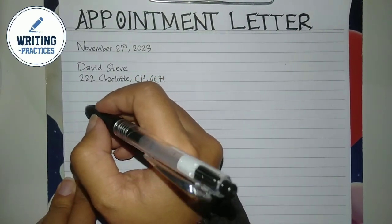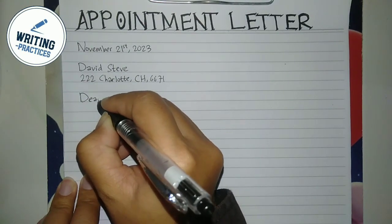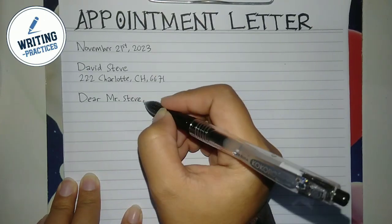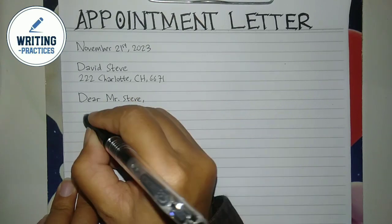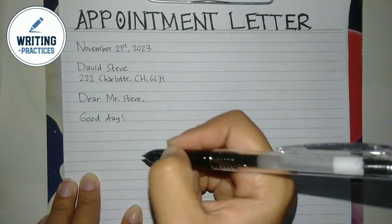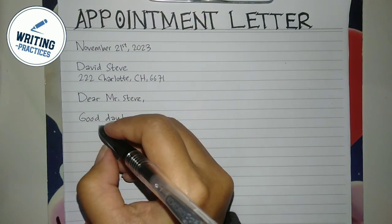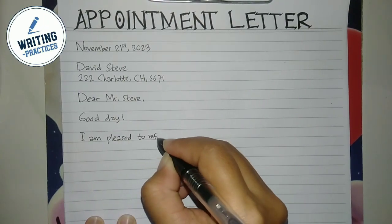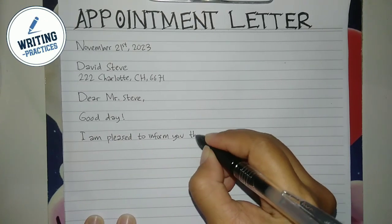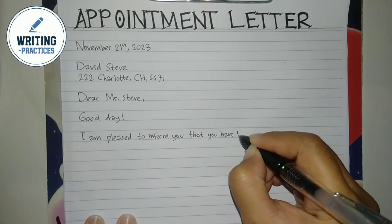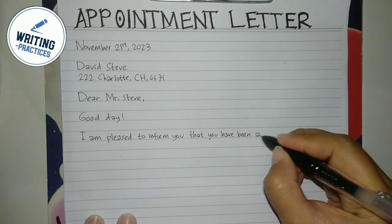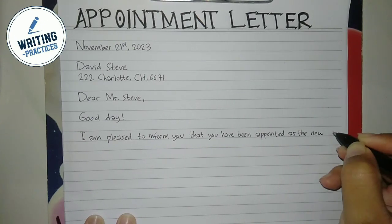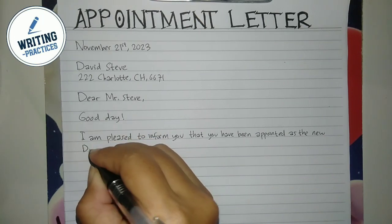You may open the letter with 'Dear Mr.' or 'Miss' followed by the name. You can give warm greetings like 'Good day' or 'Congratulations.' In the first paragraph, write that you are informing the recipient that he or she is accepted. You need to mention the job position, the company name, and the date the recipient can start to work.